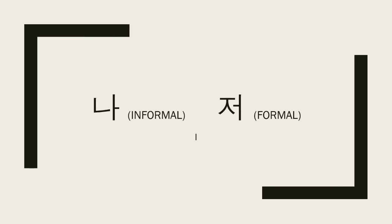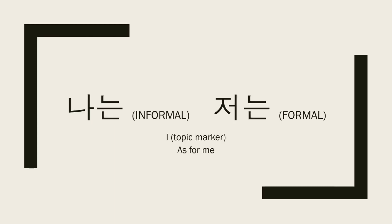나 is an informal way of saying I. 저 is a formal way of saying I. You would normally see 나 and 저 with particles — here it's with a topic marker: 나는 and 저는.